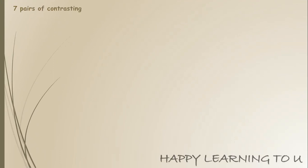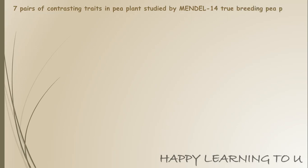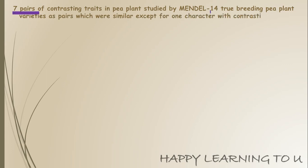To carry out this hybridization experiment, he used seven pairs of contrasting traits in these pea plants — meaning 14 true breeding pea plants in total, which were similar to each other except for one character with contrasting traits. So there was one character in each pair which was different, and all other characteristics were the same. He selected them in such a way.